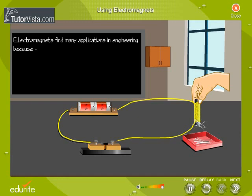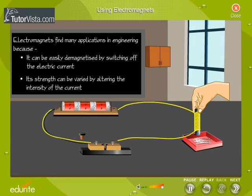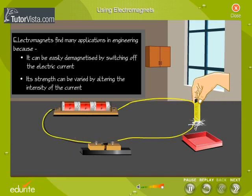Electromagnets find many applications in engineering because it can be easily demagnetized by switching off the electric current. Its strength can be varied by altering the intensity of the current.